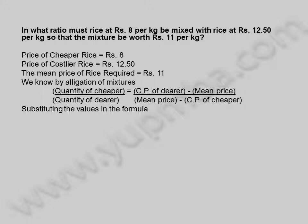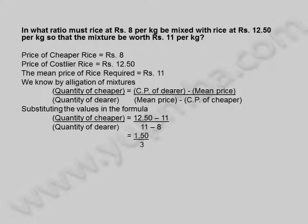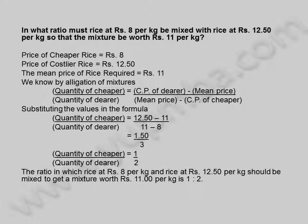Substituting the values in the formula, quantity of cheaper by quantity of dearer is equal to 12.50 minus 11 by 11 minus 8, is equal to 1.50 by 3, is equal to 1 by 2. The ratio in which rice at ₹8 per kilogram and rice at ₹12.50 per kilogram should be mixed to get a mixture worth ₹11 per kilogram is 1 is to 2. Let us see another example.